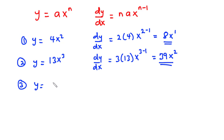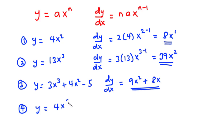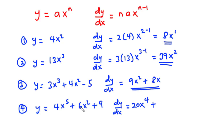Given that y is equal to 3x cubed plus 4x squared minus 5, then dy/dx becomes 3 times 3 is 9, so 9x squared, plus 4 times 2 is 8, so 8x. When you differentiate a constant you get 0, so the answer is 9x squared plus 8x. Given that y is equal to 4x exponent 5 plus 6x squared plus 9, then dy/dx is 4 times 5 is 20, so 20x exponent 4, plus 6 times 2 is 12, so 12x, and 9 goes to 0. So we have 20x exponent 4 plus 12x.